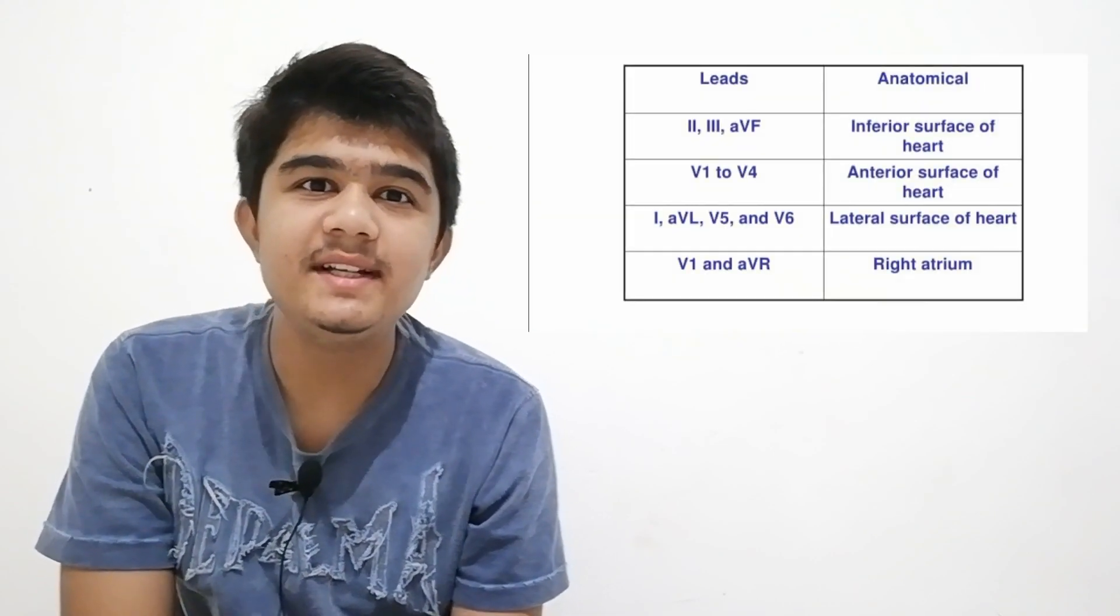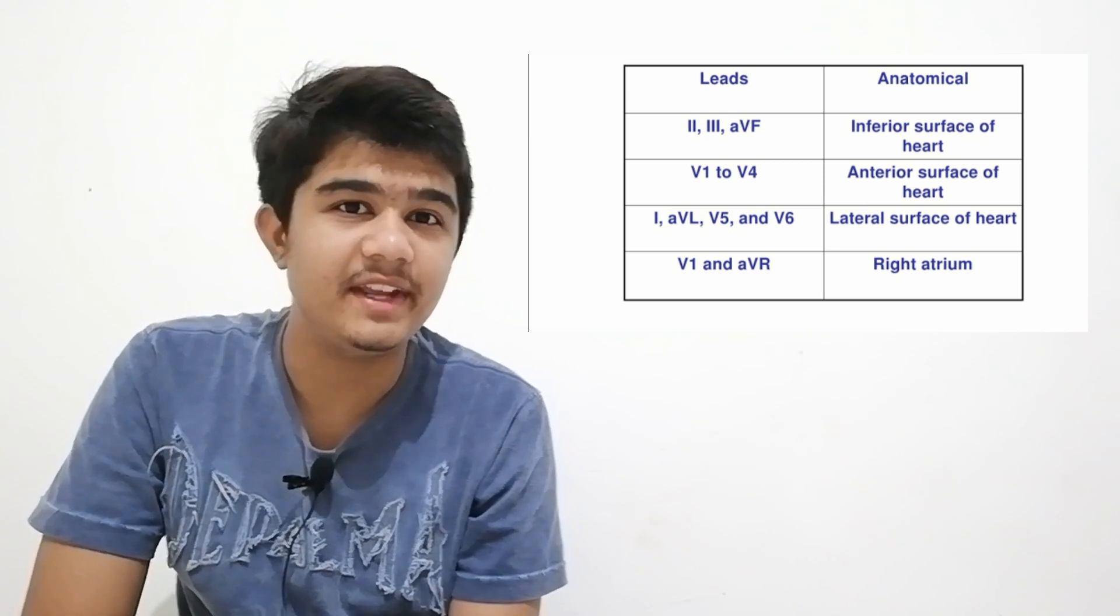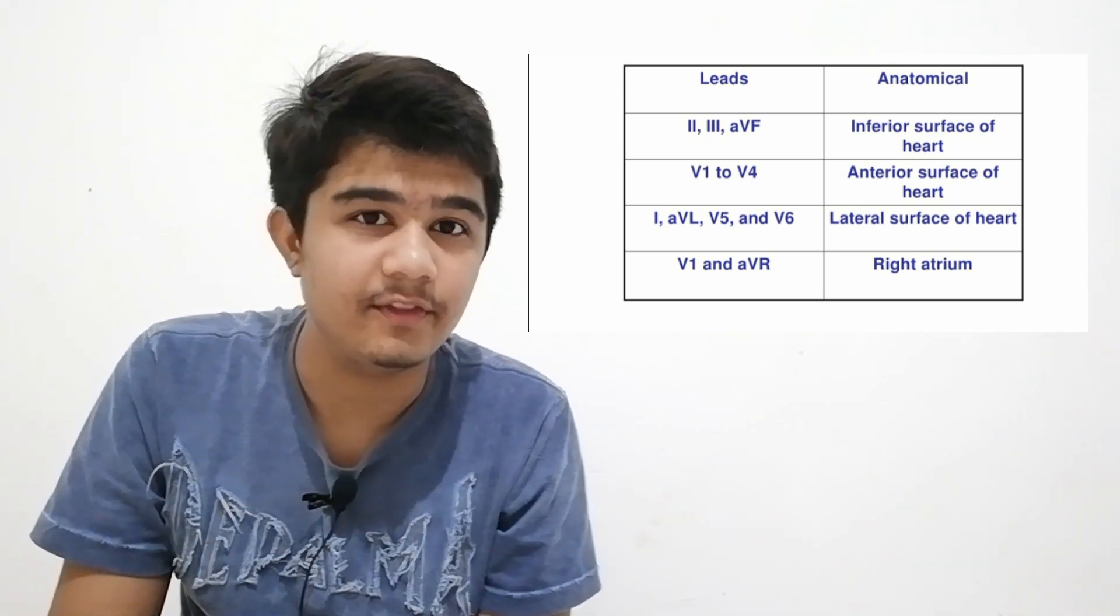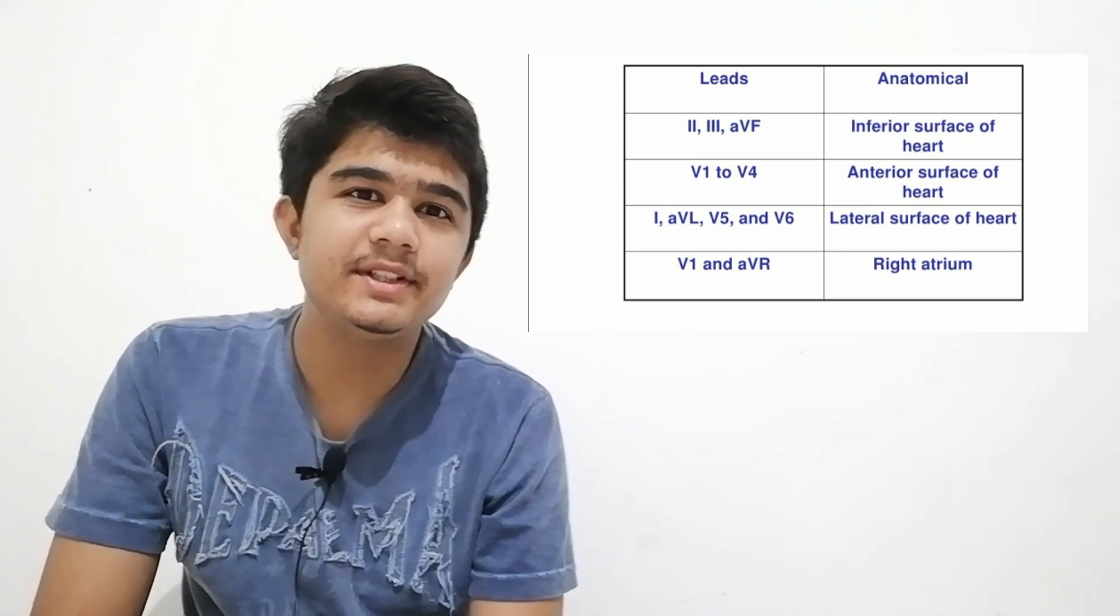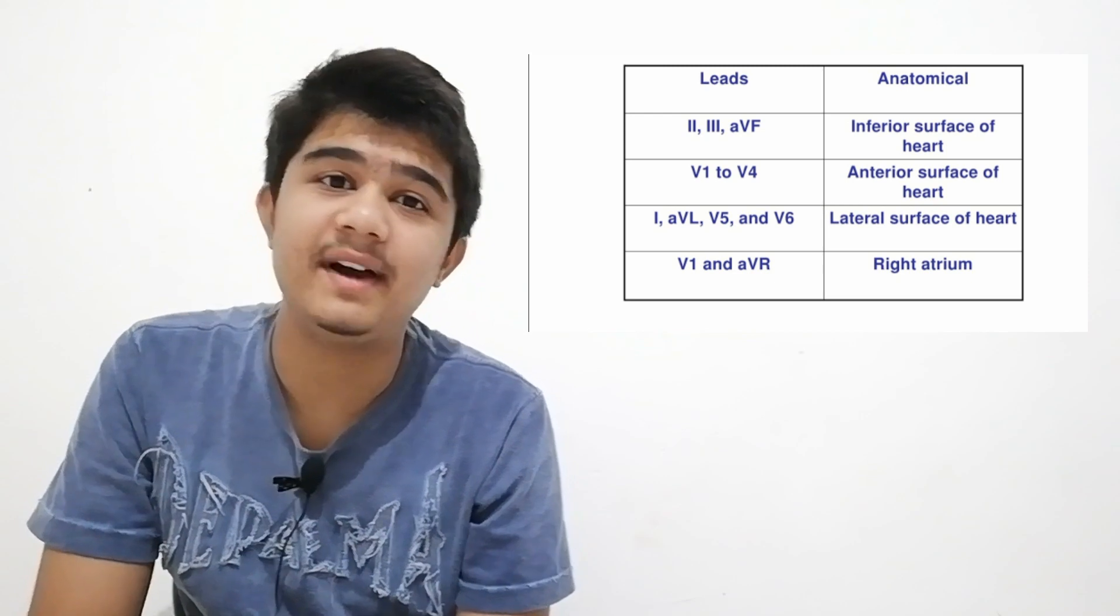Now let's talk about the chest leads. Just look at the image. On the inferior surface there are lead 3, lead 2, and AVF. On the anterior surface are V1, V2, V3, and V4. On the lateral surface are lead 1, AVL, V5, and V6. On the right atrium cavity, AVR is there.